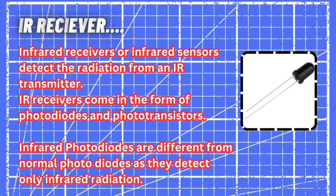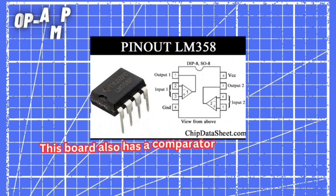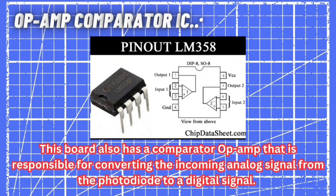Now let's take a look at the IR receiver. An infrared receiver or infrared sensor detects the radiation from an IR transmitter. IR receivers come in the form of photodiodes and phototransistors. Infrared photodiodes are different from normal photodiodes as they detect only infrared radiation.